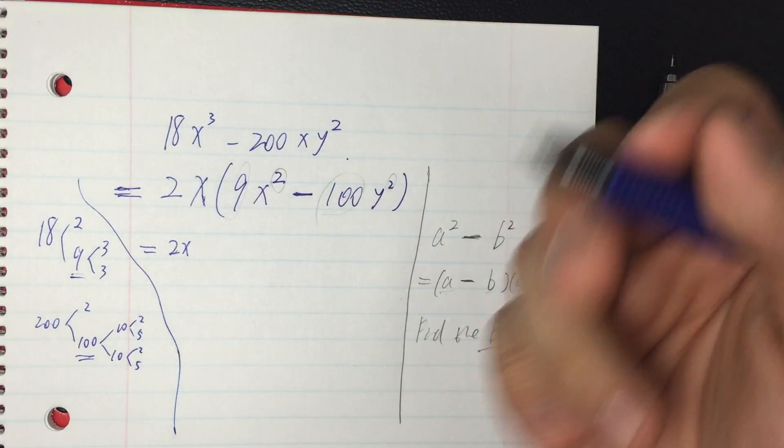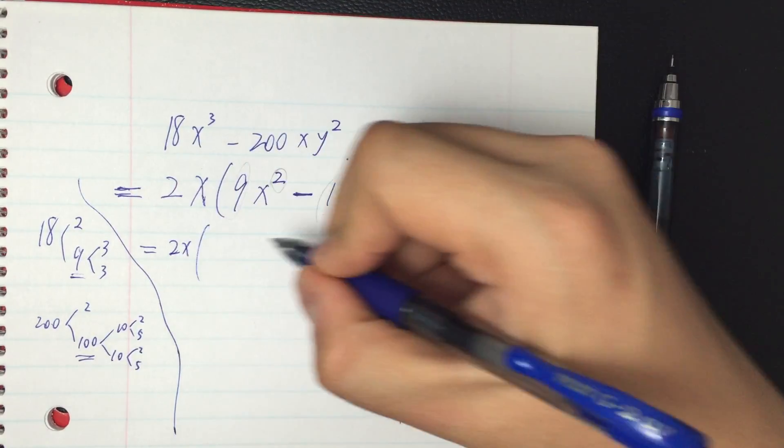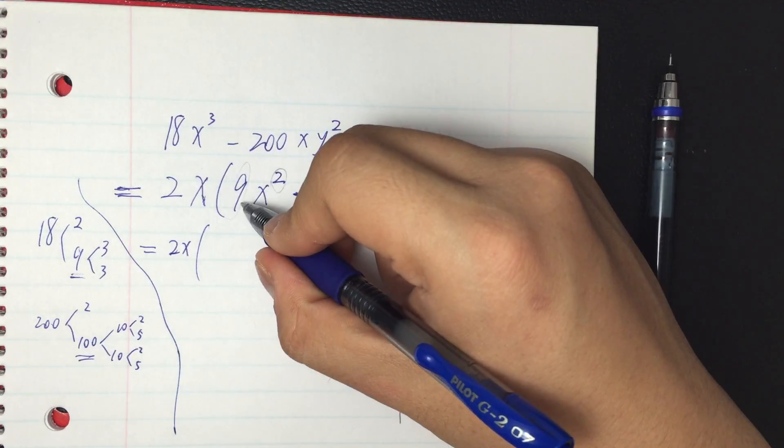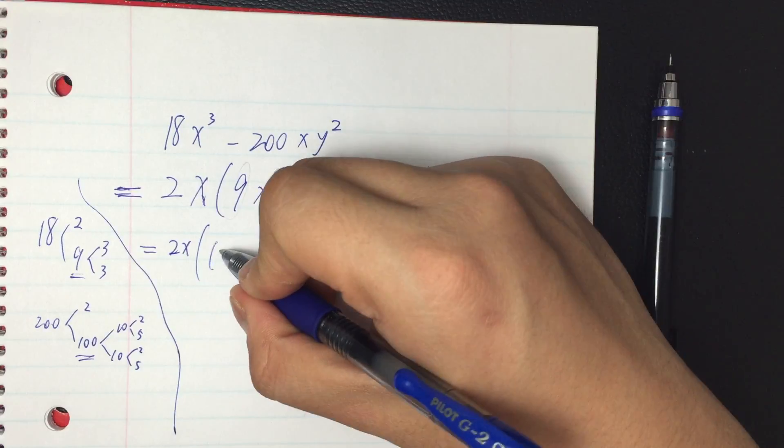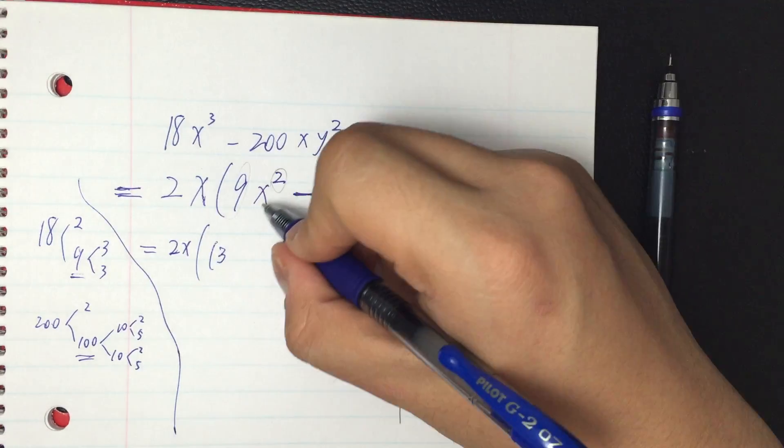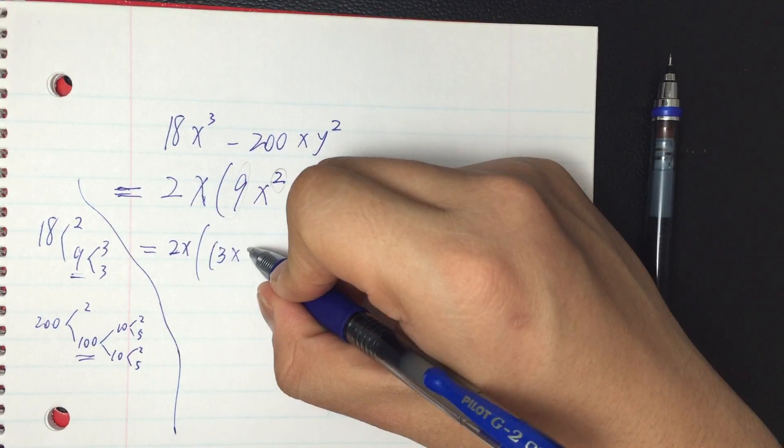So 2x in front, I cannot touch it anymore. I have 9x squared. Well, 9 is basically the square of 3. X squared is the square of x.